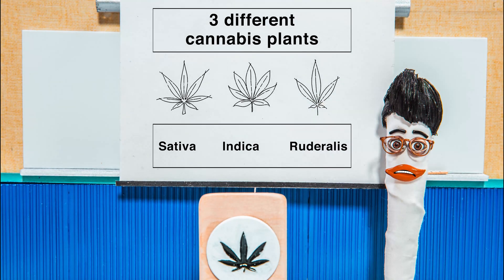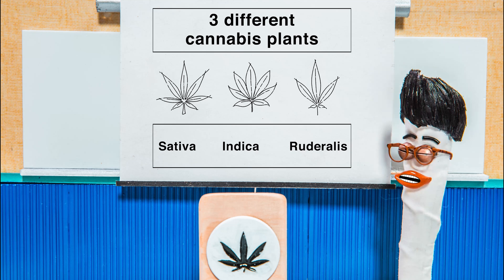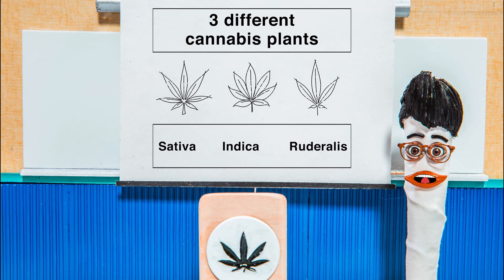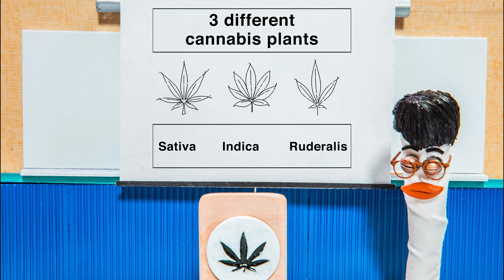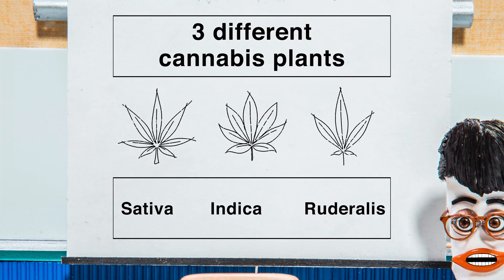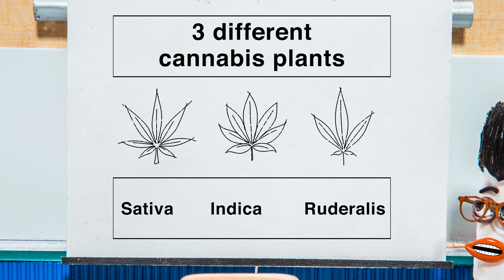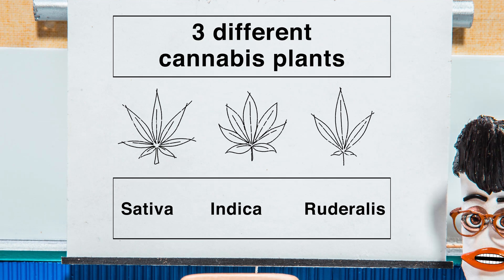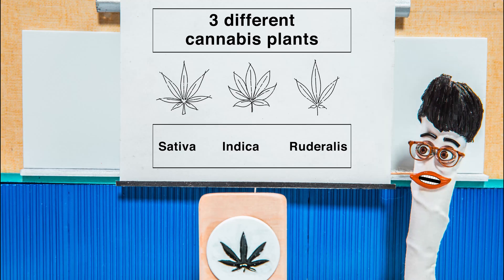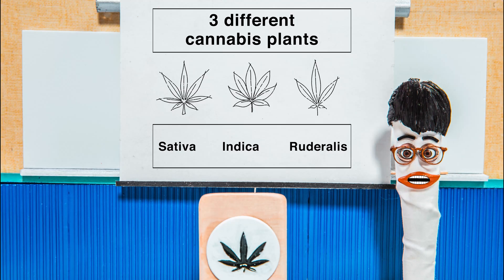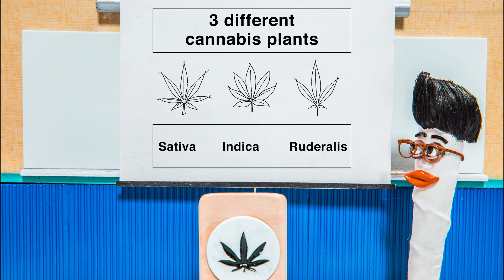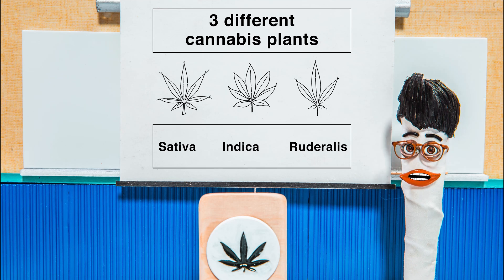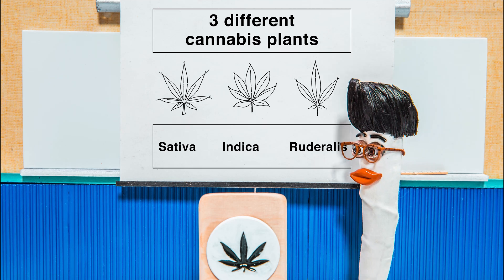Cannabis is a genus of flowering plants in the Cannabaceae family, which consists of three primary species: Cannabis sativa, Cannabis indica, and Cannabis ruderalis. It is a dioecious plant, which means it can be divided into male and female seedlings.